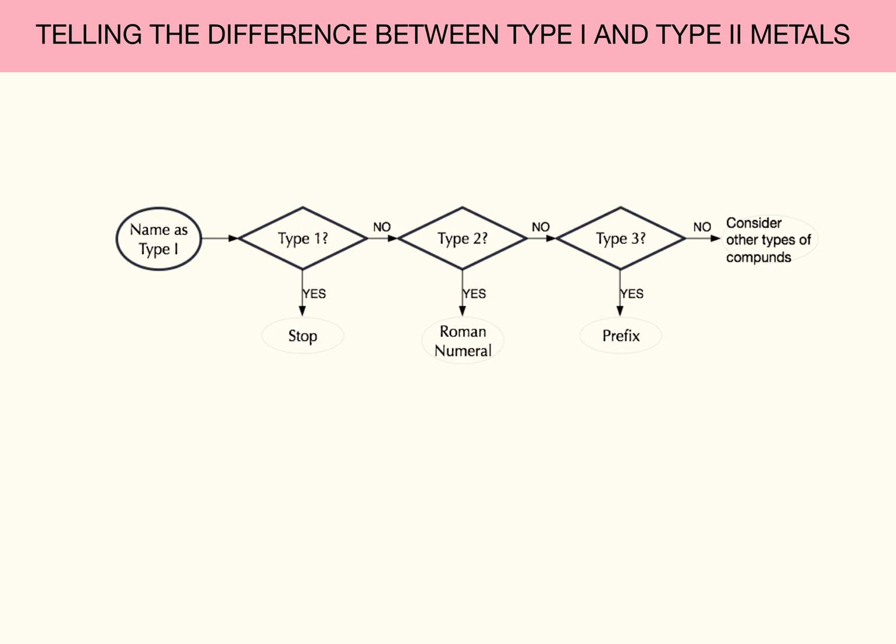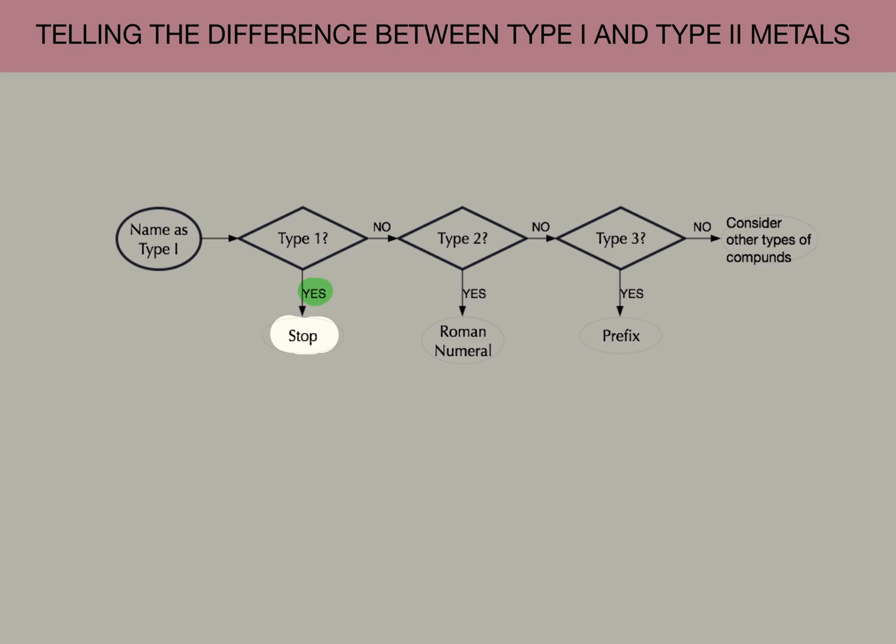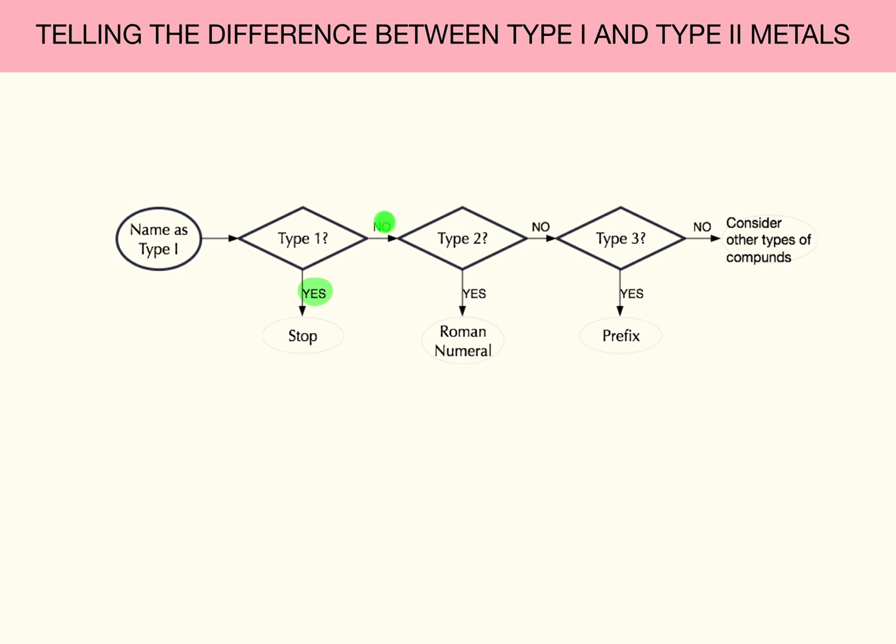Recall the strategy for naming Quadrant 1 compounds is to first name the material as a Type 1, and then you check to see is it a Type 1. Is it made from a Type 1 metal? If yes, you stop. If it's not a Type 1 metal, you proceed to see if it's a Type 2 metal.